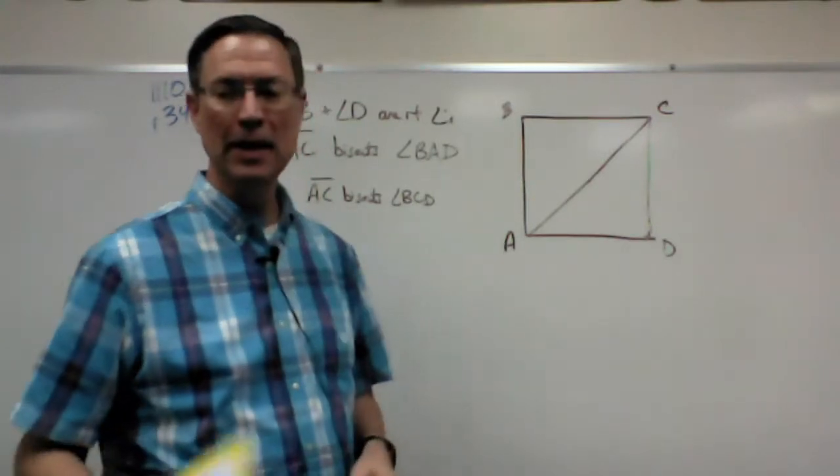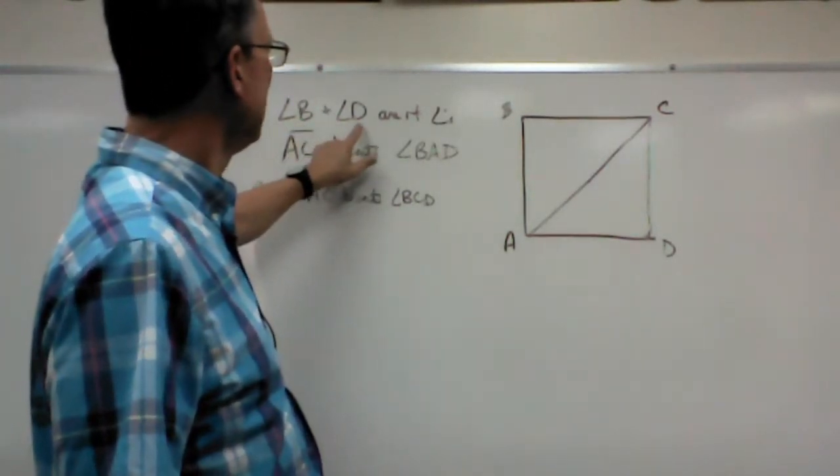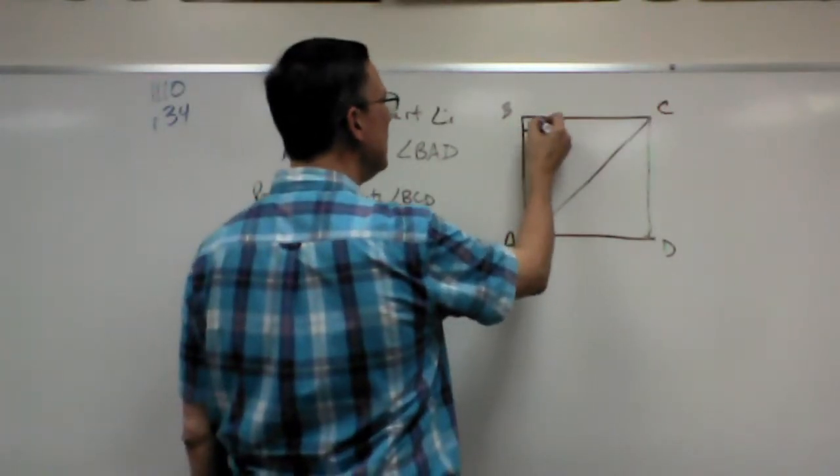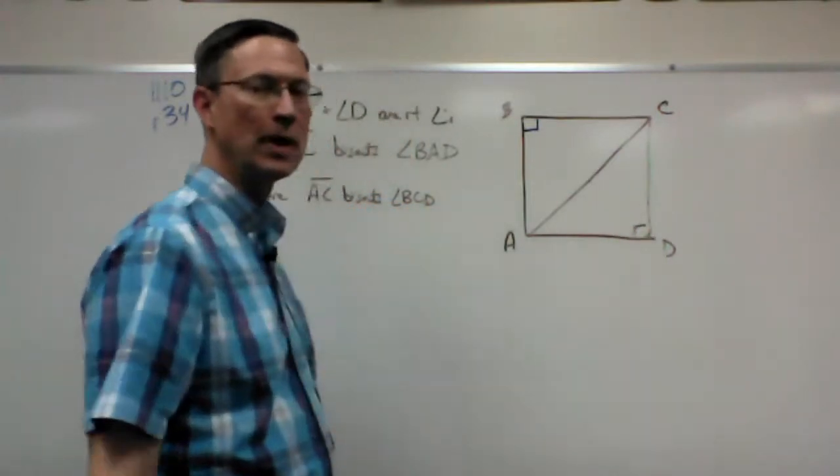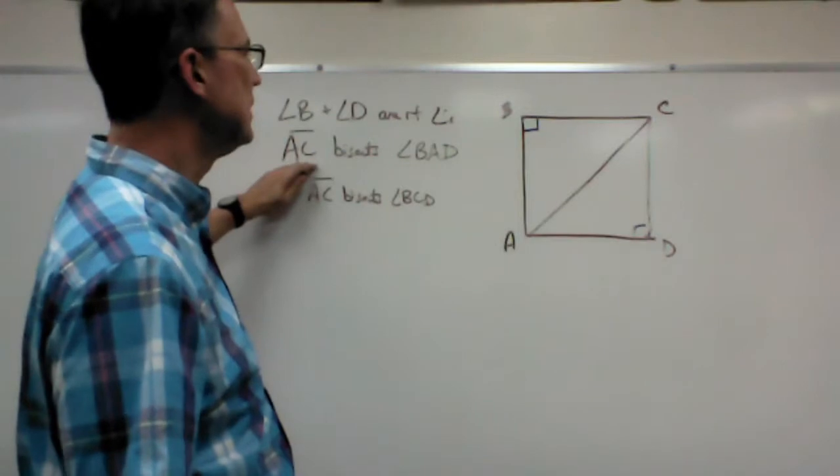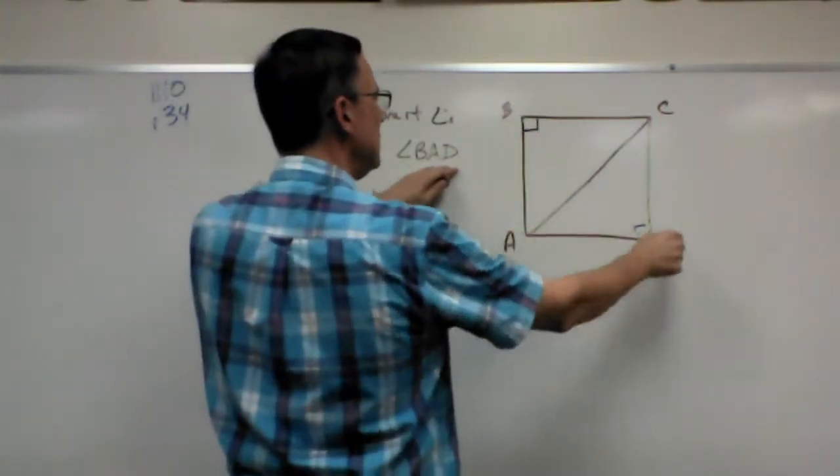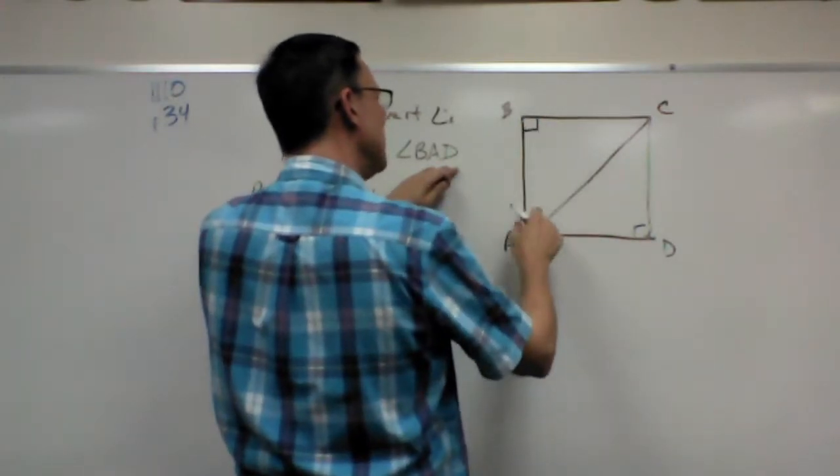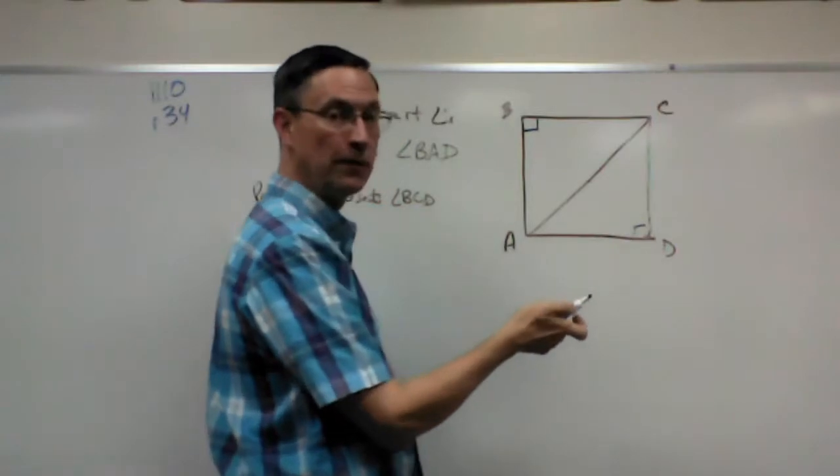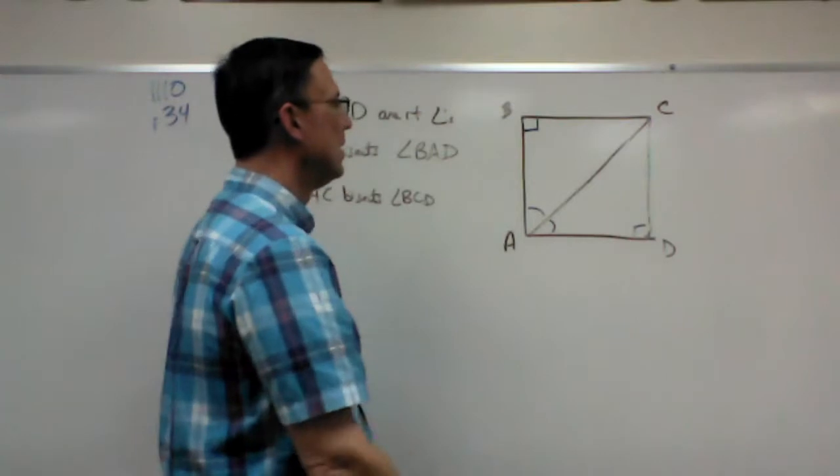Let's take what is given here. Angle B and angle D are right angles, so let's label them with the little squares to indicate those are right angles. That was given. It says AC bisects angle BAD. We're taking this angle and bisecting it with this. You know by definition of bisector that that means that that angle is equal to that one.